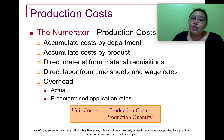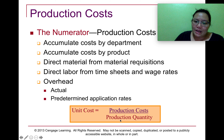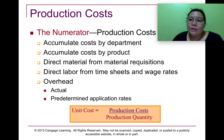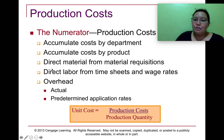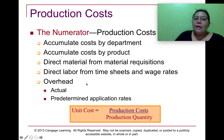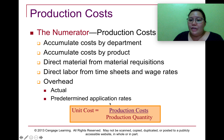The production cost is our numerator in the formula. What we do here is accumulate cost by department. Just like in job order costing, it is also possible that we have multiple departments in process costing. We also accumulate cost by product. Direct material cost comes from material requisitions, direct labor from time sheets and wage rates, and overhead may use actual or predetermined application rates.